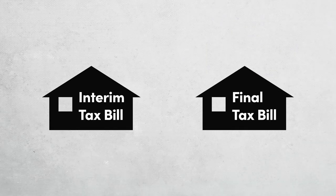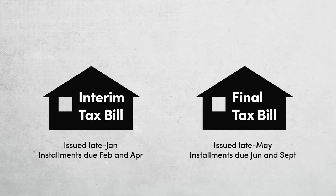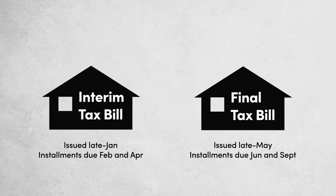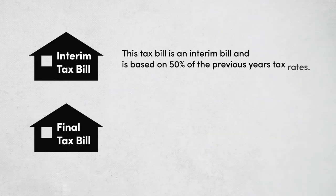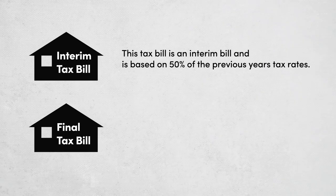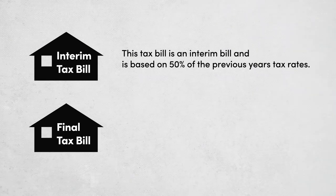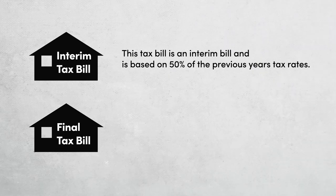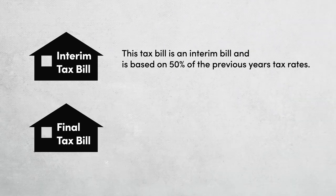The town issues two tax bills a year. The first bill is typically issued in late January with installment due dates in February and April. This bill is an interim bill and is based on 50% of the previous year's tax rates. This is done since the budget is not typically completed in time for the first tax bills to be issued.